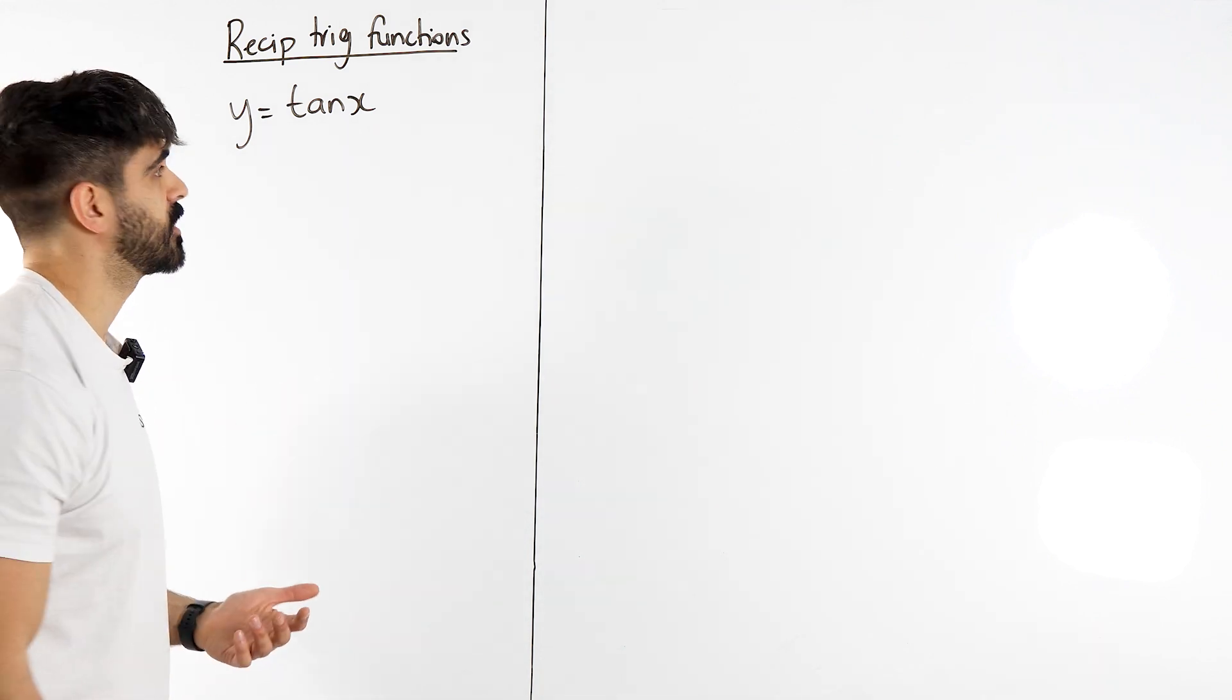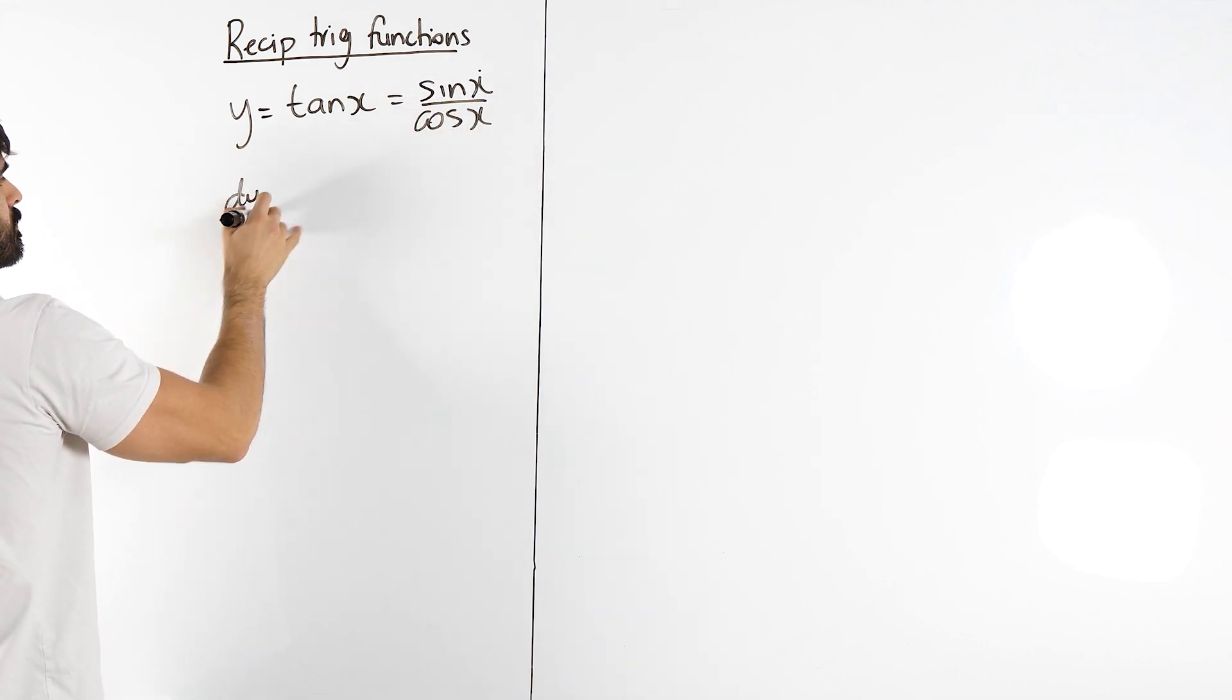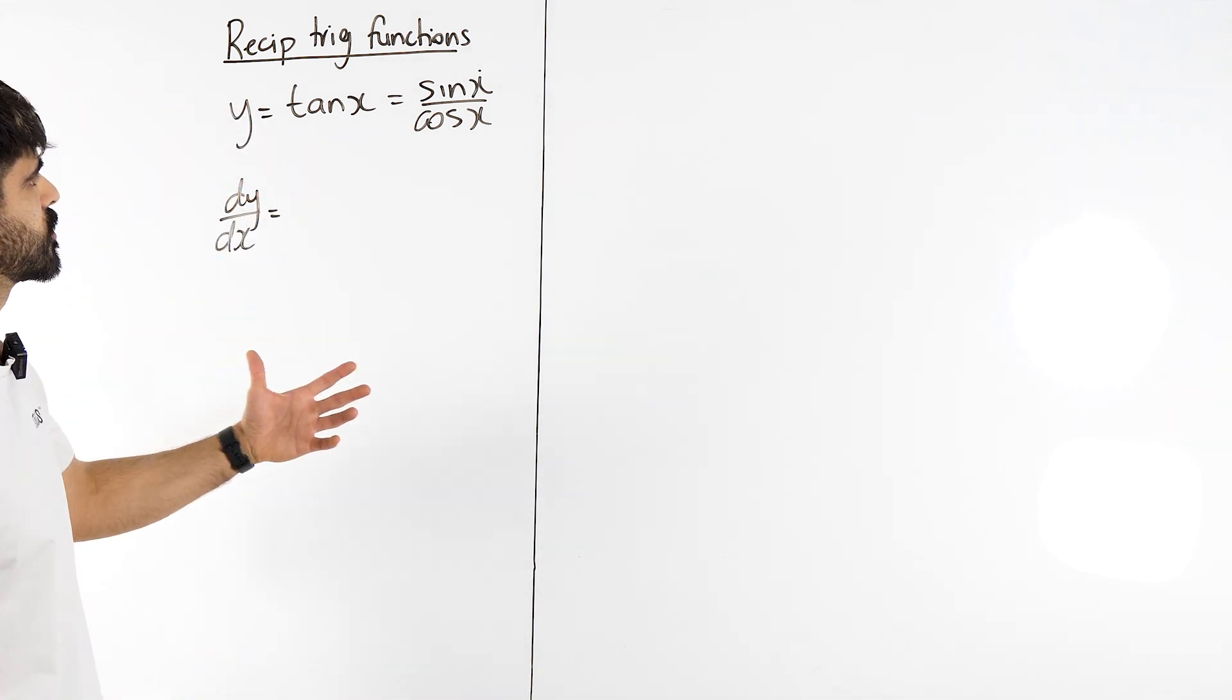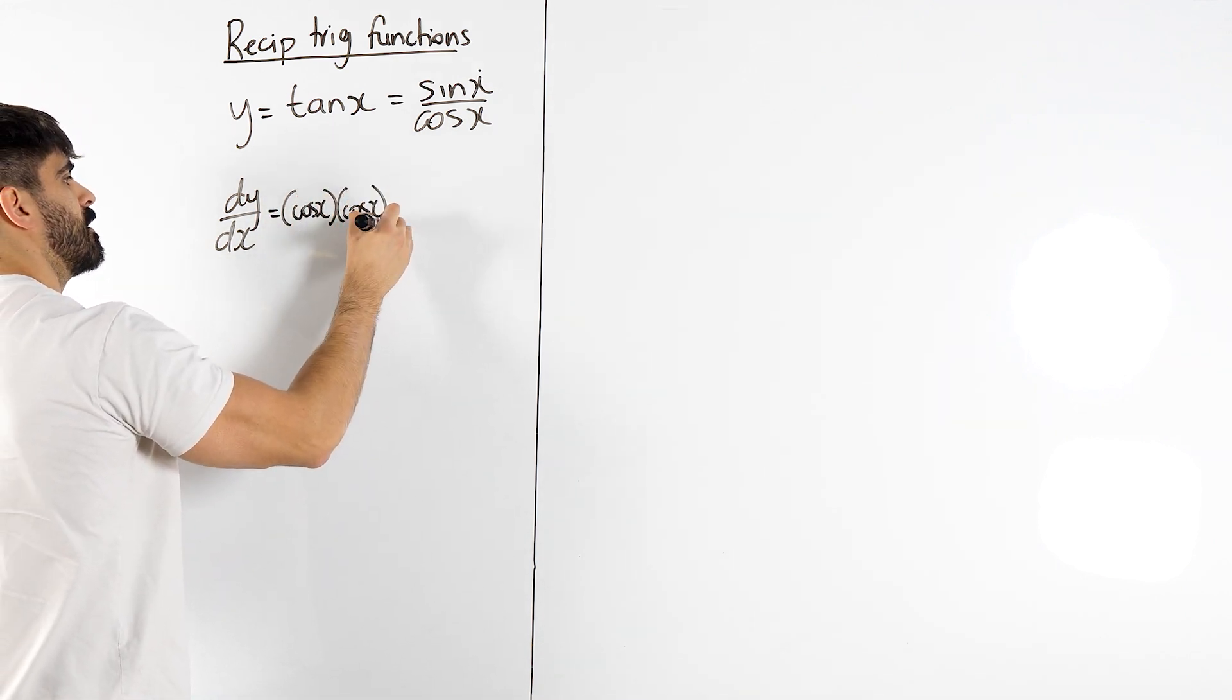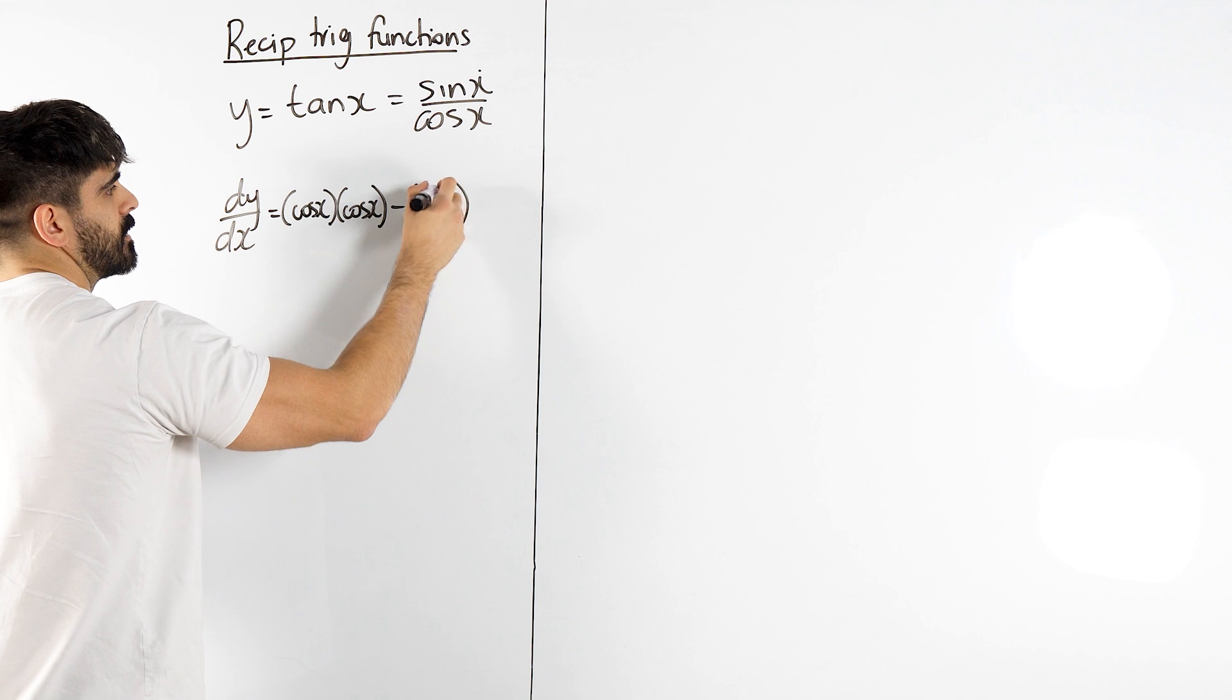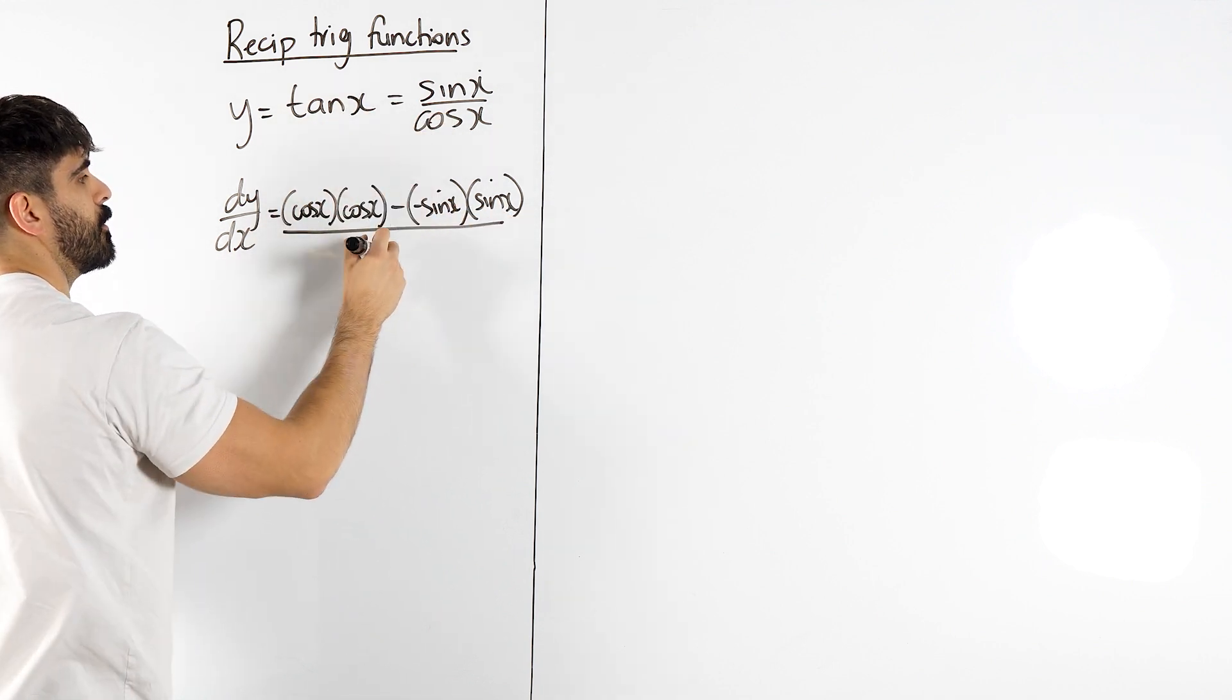To prove what tan differentiates to we'll rewrite it as sin over cos and use the quotient rule. We can go straight into it. The quotient rule says differentiate the top, sin differentiates to cos times the bottom minus differentiate the bottom, cos differentiates to minus sin, then times the top. Differentiate top times bottom, differentiate bottom times the top, all over the bottom squared.